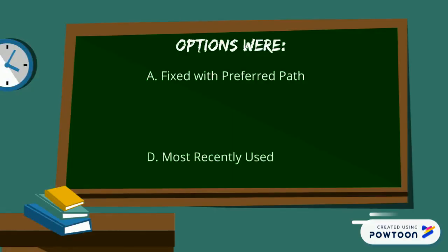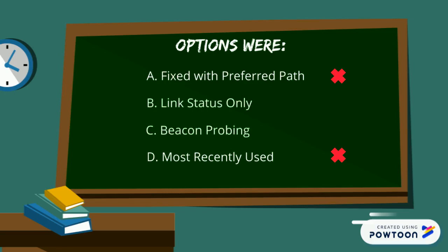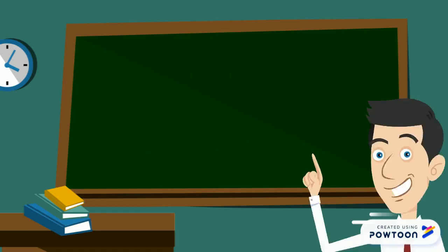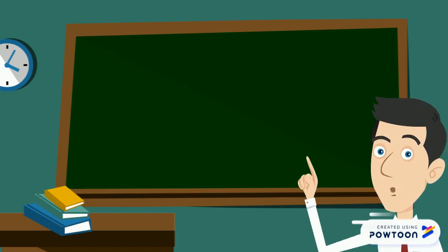Reviewing the other options: fixed with preferred path and most recently used are storage multi-pathing algorithms, which do not play any role in network failure detection. Link status only and beacon probing are the only two algorithms used for network failure detection, so the answer is link status only and beacon probing.